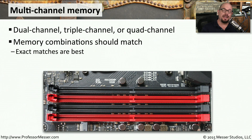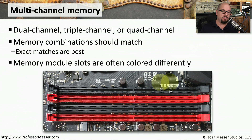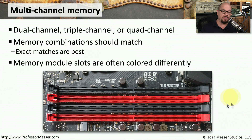When deciding the types of memory modules to use in a dual channel, triple channel, or quad channel system, you want to be sure all of those memory modules are identical — no different sizes or different performance specifications. In the case of this particular motherboard, we even have color cues showing where to install modules. This motherboard supports dual channel, so we put two modules in the black slots and two in the red slots, maximizing throughput to and from our system RAM.